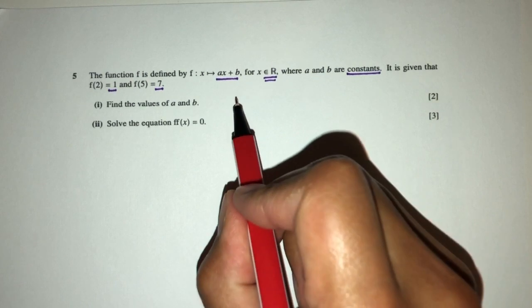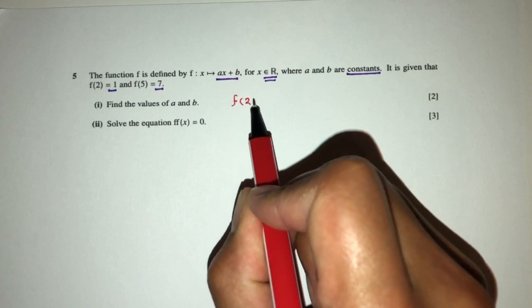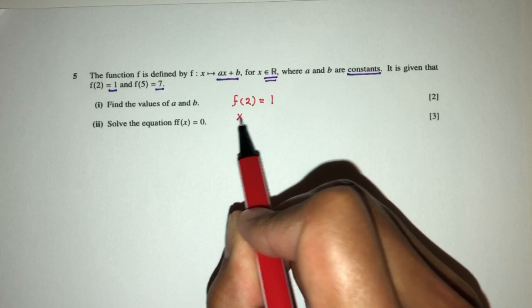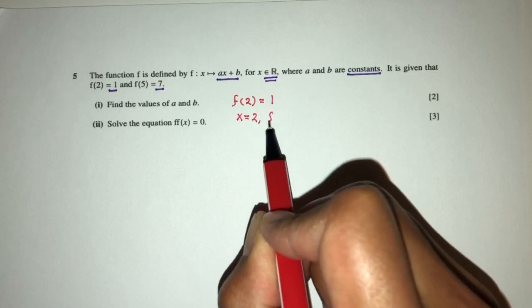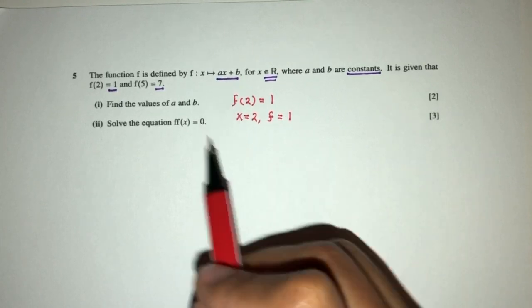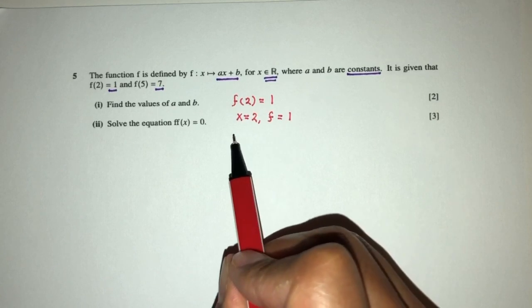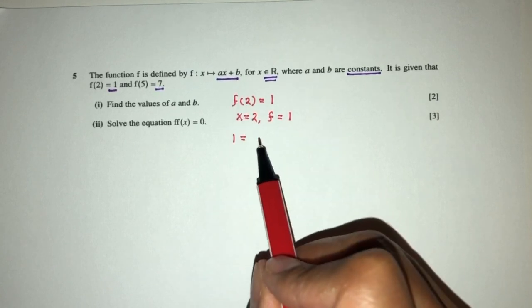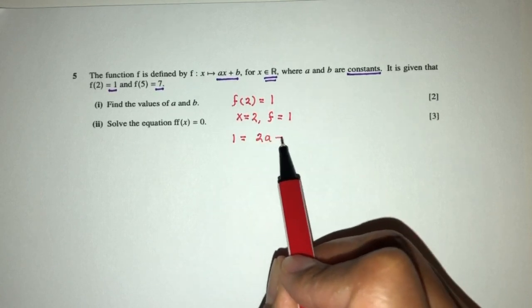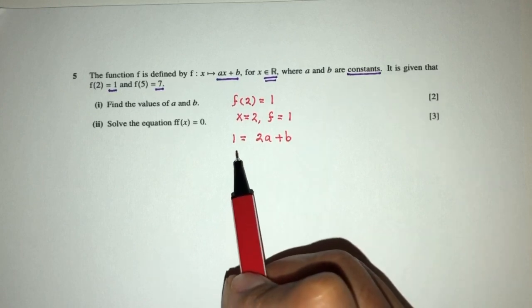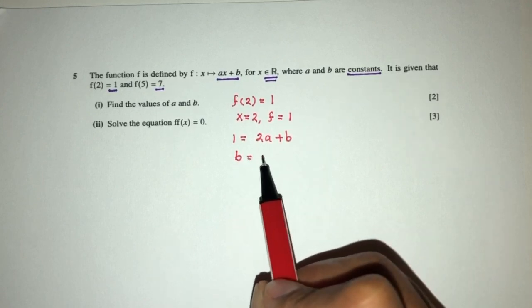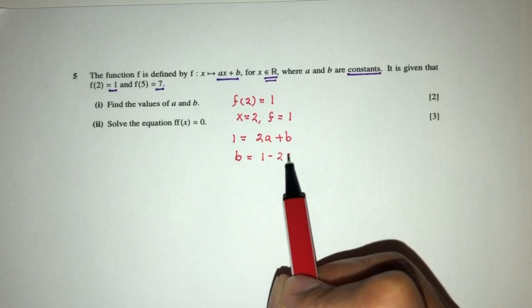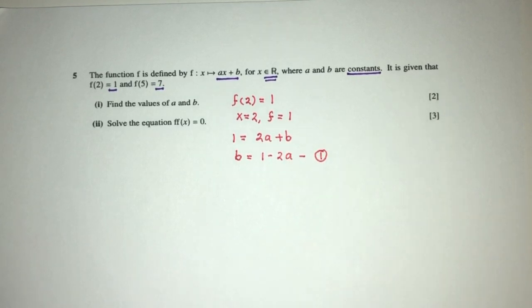let's use f(2) is equal to 1, which means when the value of x is 2, the value of f will be 1. Replace, so that will be, value of f is 1, x will be 2, so that will be 2a plus b. So let's make b become the subject, you will have b will be 1 minus 2a, that will be my first equation.